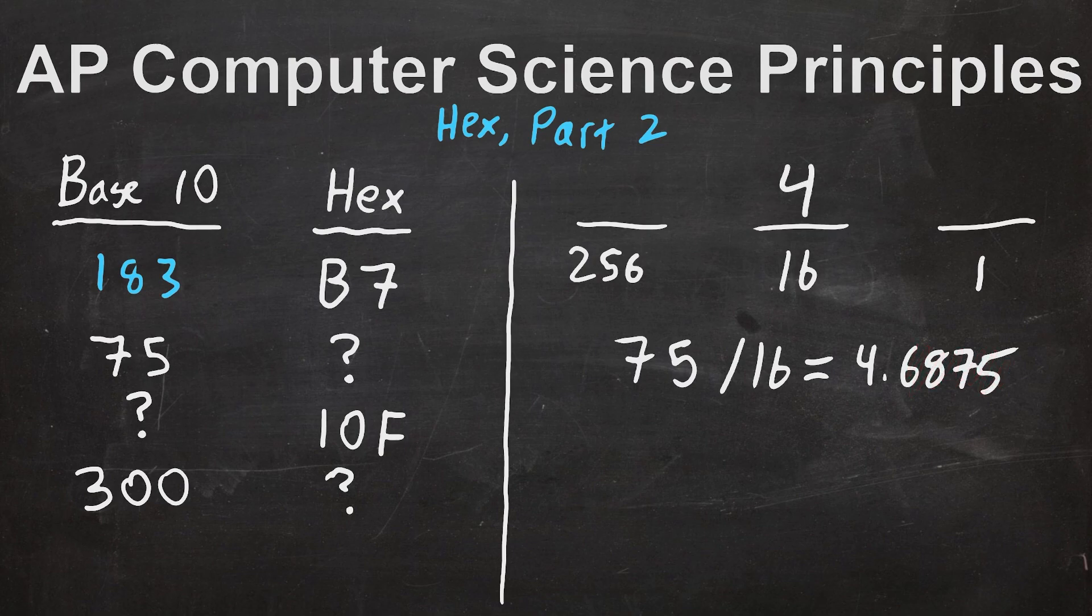Now that we've got the 16s place dealt with, we need to figure out how many 1s are left over. Now there are a couple of ways to do that. I'll show you two. One way is to use this decimal right here, the part that I told you to ignore earlier. You can take that .6875 and multiply it times our scale factor, 16. What is .6875 times 16? It does look like it is 11.